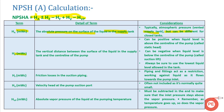The next term is plus or minus HZ. HZ is the vertical distance between the surface of the liquid in the supply tank and the centerline of the pump — in simple words, HZ is the static suction head. This static suction head is positive if the pump has positive suction, and negative if the pump has negative suction.